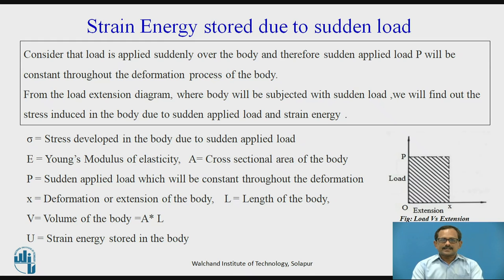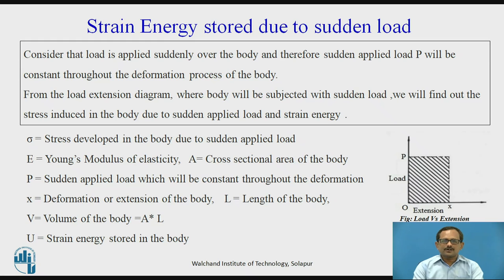Sigma is the stress developed in the body due to suddenly applied load. E is Young's modulus of elasticity. A is the cross-sectional area of the body. P is the suddenly applied load. X is the deformation or extension of the body. L is the length of the body. V is the volume of the body, equal to area multiplied by length, that is A into L. U is the strain energy stored in the body.